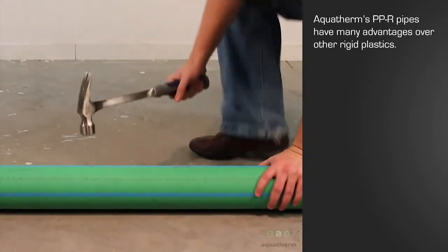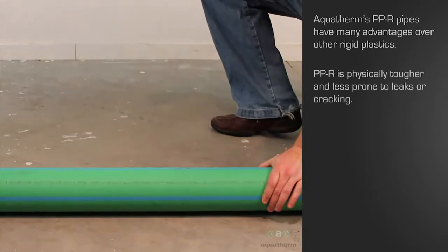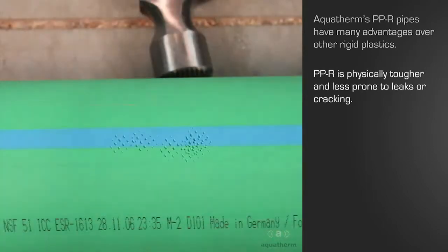There are many advantages to using polypropylene pipe when compared to other systems. Compared to other rigid plastics, such as PVC and CPVC, polypropylene is much more durable. It is less likely to be damaged before or after installation.